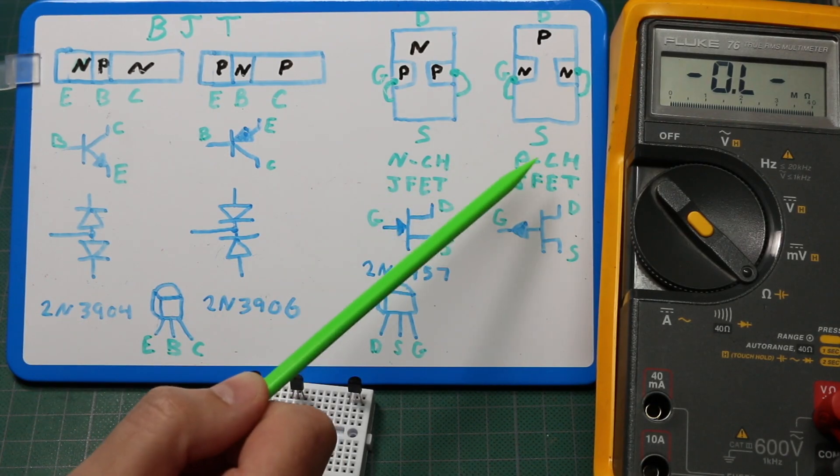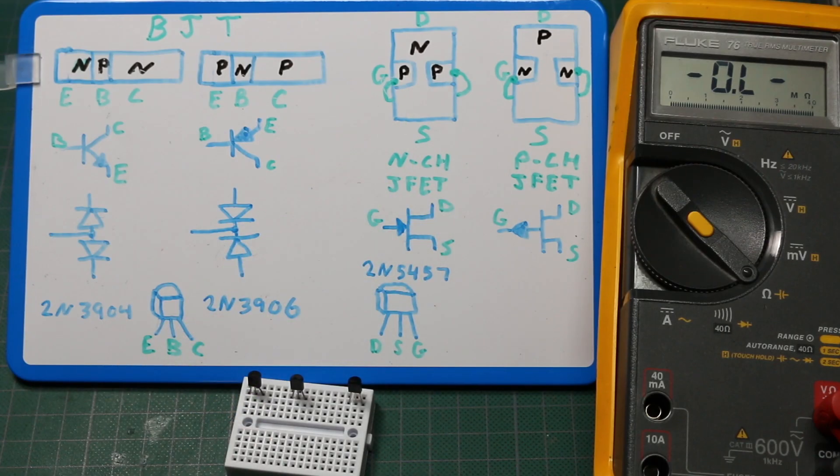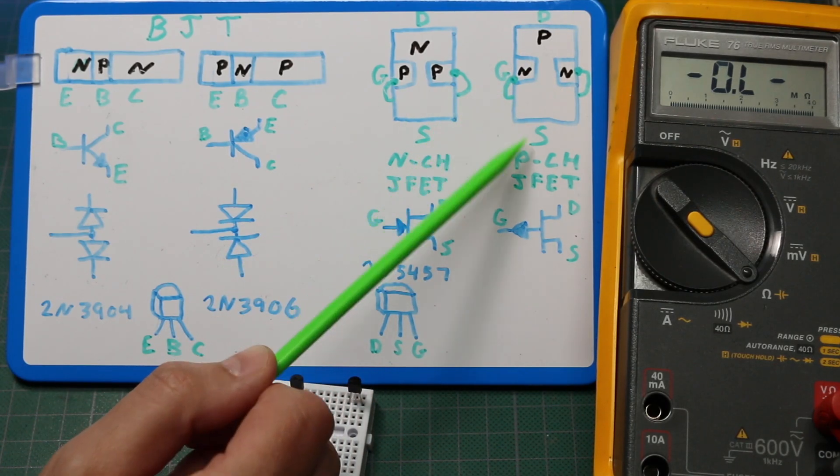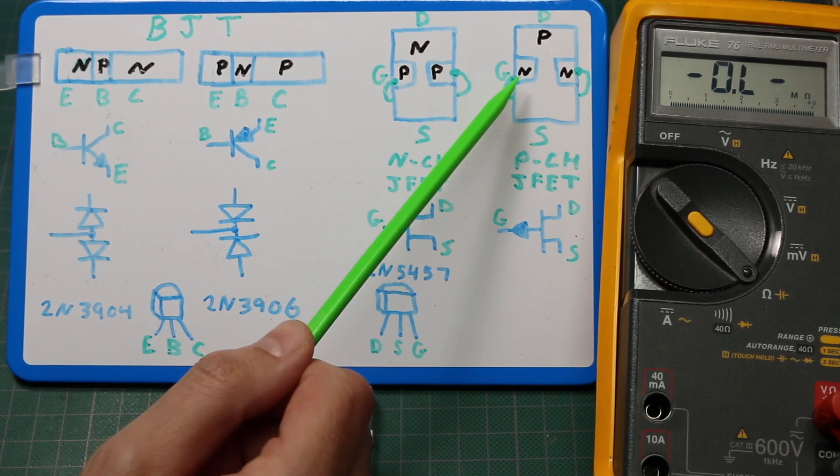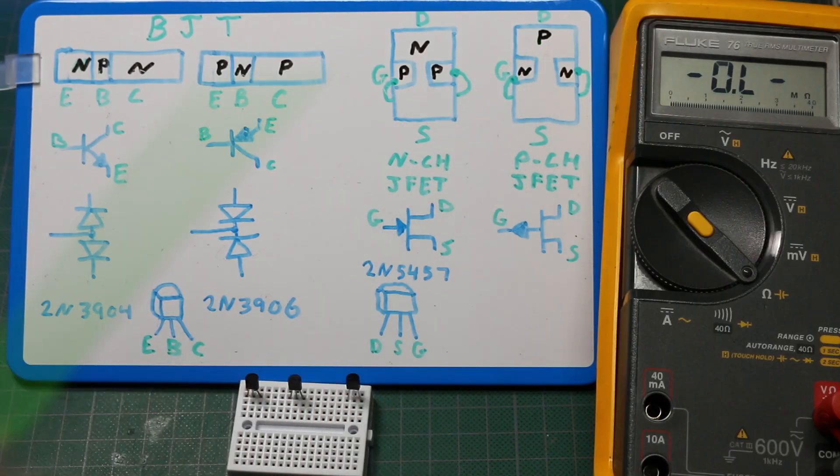I don't have a P channel JFET to test, but it would essentially be the opposite. The channel is open when gate to source voltage is zero volts, and the gate is N-type silicon, while the drain to source channel is P-type.